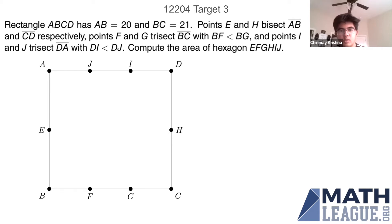We have these points and we're asked to find the area of hexagon EFGHIJ. We know that the side of the rectangle is 20 by 21 and we want to find the area of this hexagon.